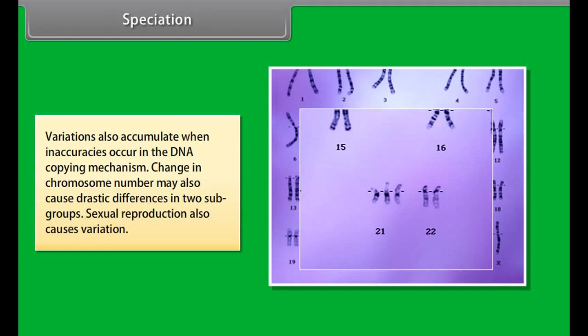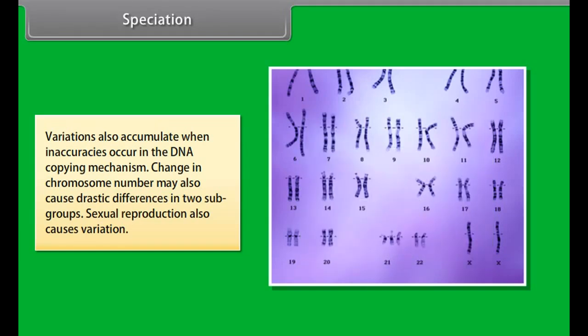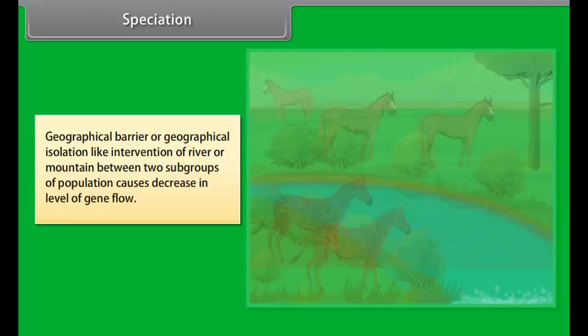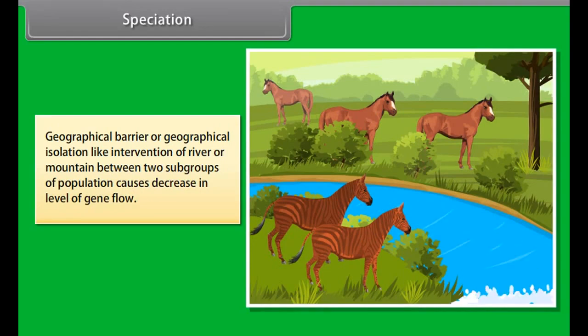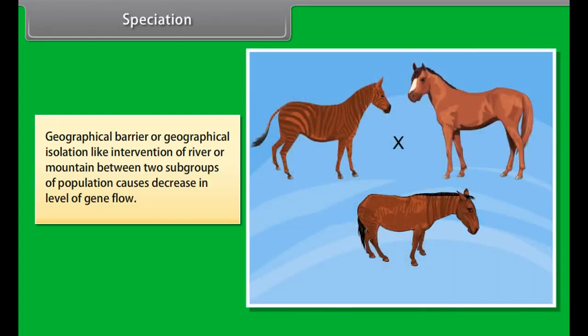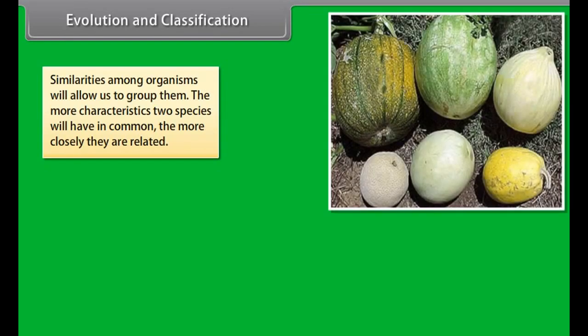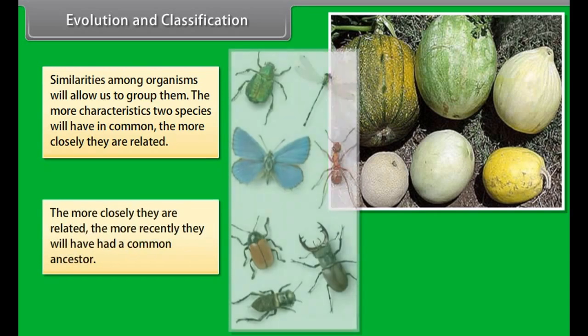Speciation is a process of forming new species when variations occur in geographically isolated members, leading to reproductive isolation where members of some species do not reproduce with each other. Migration of members with subtle changes into another population helps spread new traits into new populations. Genetic drift — the elimination of certain genes from a population due to natural calamity or death — brings change in gene frequency. Variations also accumulate when inaccuracies occur in the DNA copying mechanism.